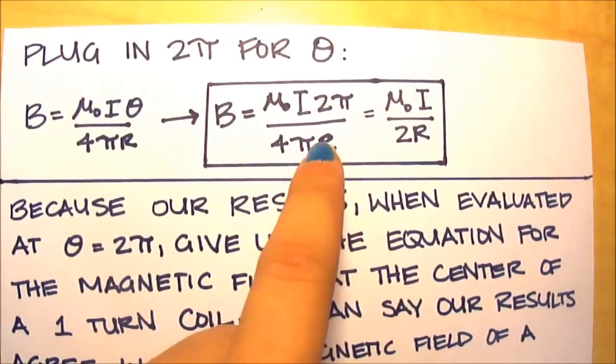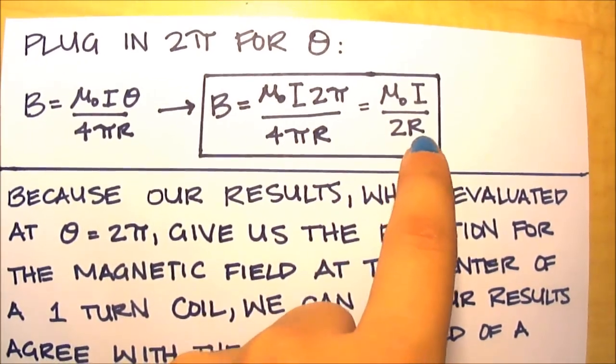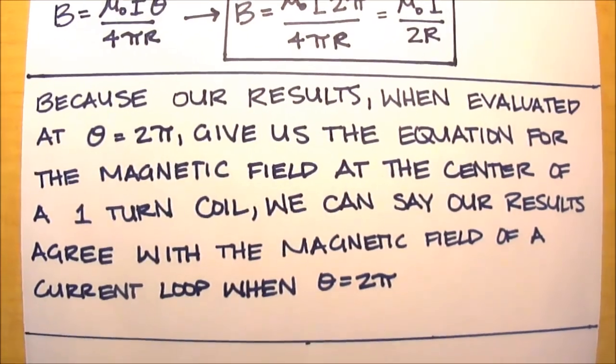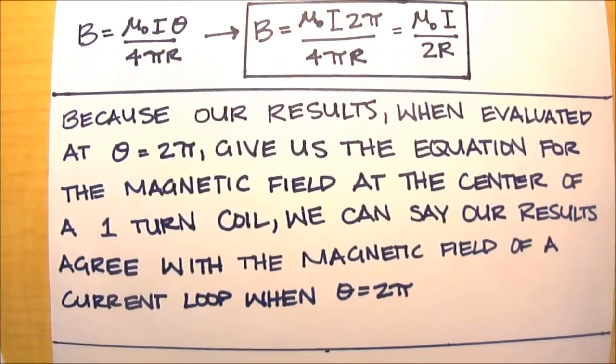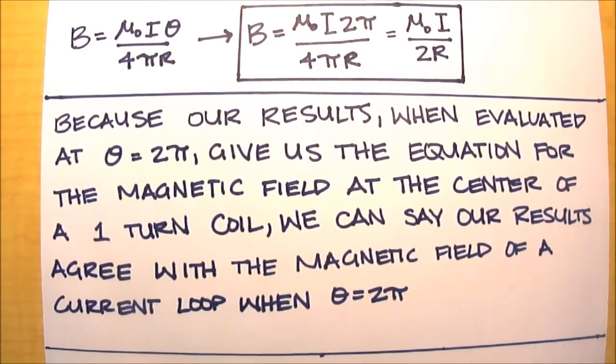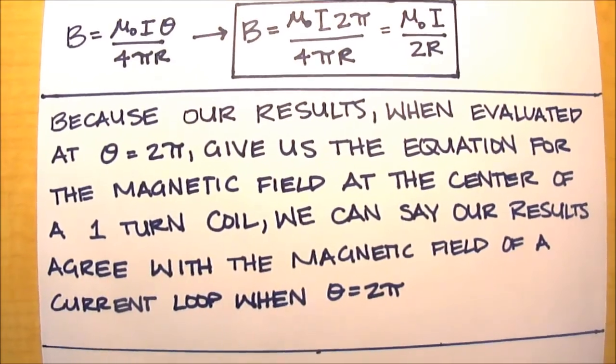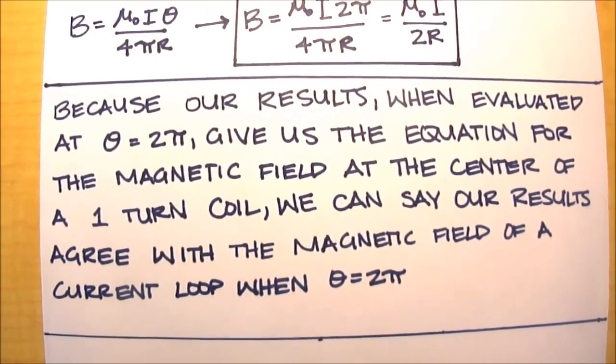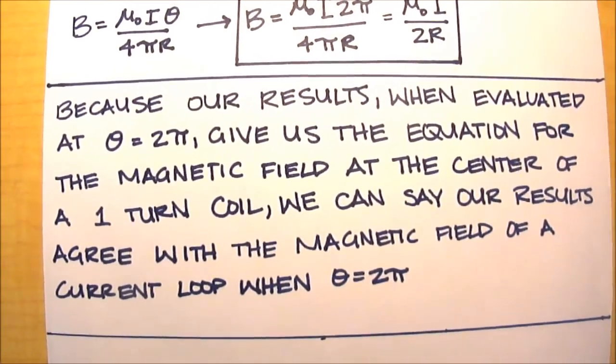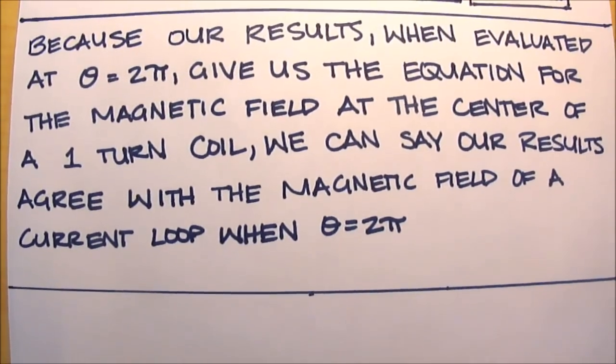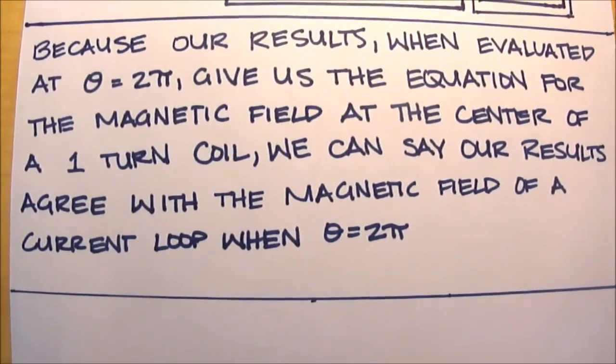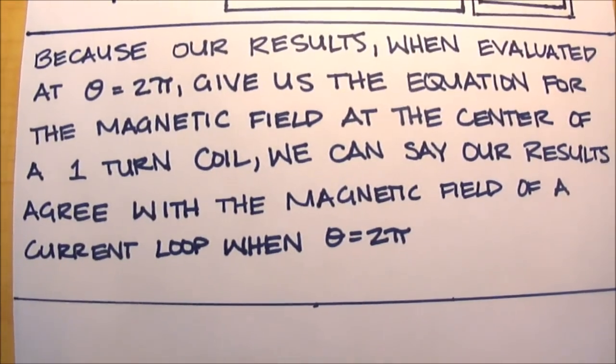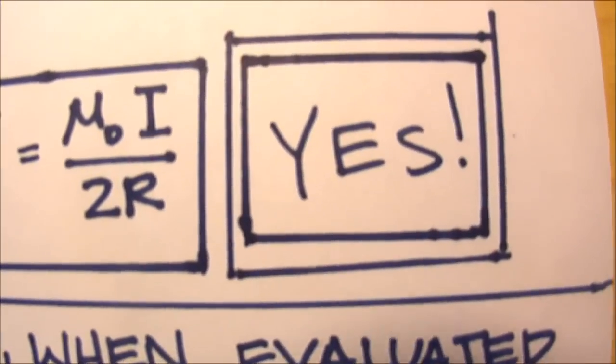Which will give us this over here, ultimately simplified to this: μ₀I over 2R. Now because our results, when evaluated at θ equals 2π, give us the equation for the magnetic field at the center of a one turn coil, we can say our results agree with the magnetic field of a current loop when θ equals 2π. In other words, our answer for part B asking if our results agree with the magnetic field of a current loop when θ equals 2π is yes.